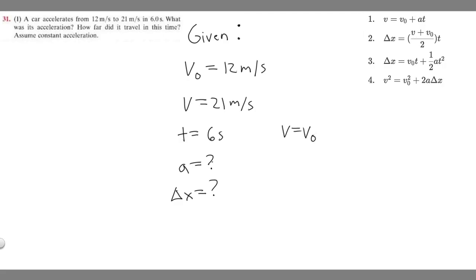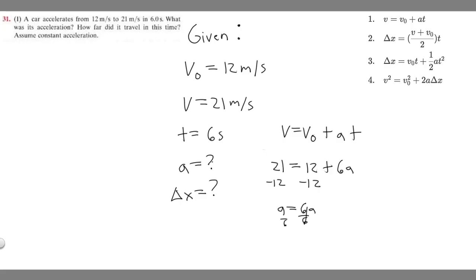Using v = v₀ + at: 21 meters per second equals 12 plus a times 6, so 21 = 12 + 6a. Subtracting 12 from both sides gives 9 = 6a, and dividing both sides by 6 gives a = 1.5 meters per second squared. That's our acceleration.